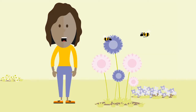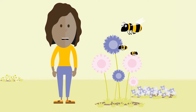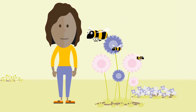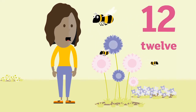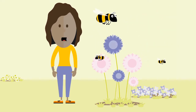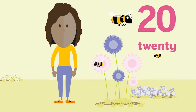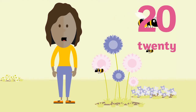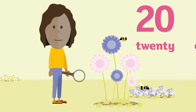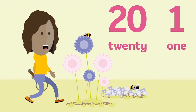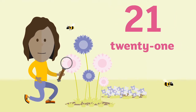When we get to 10, we have to learn new number names that have no relation to our previous learning, such as 11, 12, etc. When we get to 20, this becomes a little simpler. We have to learn the new word 20, but then we simply add numbers 1 to 9.